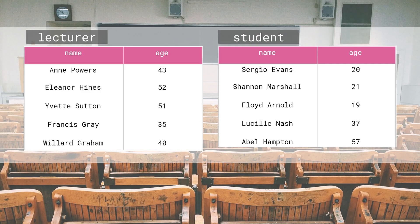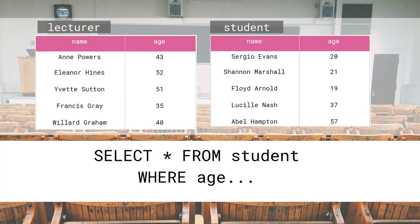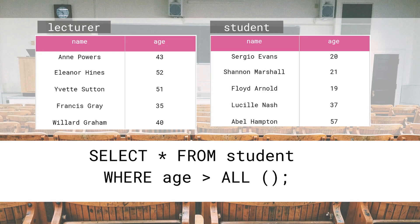Now let's say we want to answer the following question: is there any student that is older than all lecturers from our university? Let's find out how we can answer this question with a subquery that contains the ALL operator. We will start by writing: SELECT * FROM student WHERE age. We want to retrieve all information about students whose age satisfies a condition we have yet to provide. The student's age should be greater than the age of all lecturers. To that end we'll use a combination of two operators: greater than and ALL. Our WHERE clause should now contain: WHERE age > ALL followed by a pair of empty brackets and a semicolon at the end. Inside the brackets we need to write the subquery which will return all ages for all lecturers.